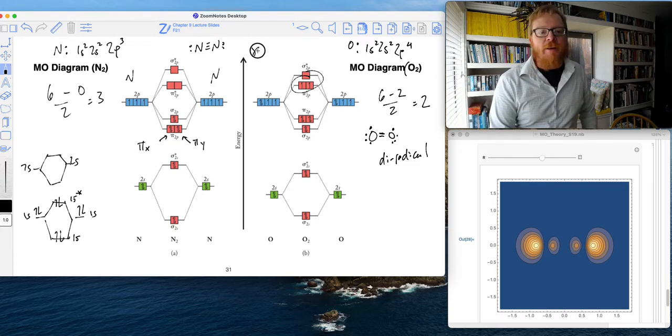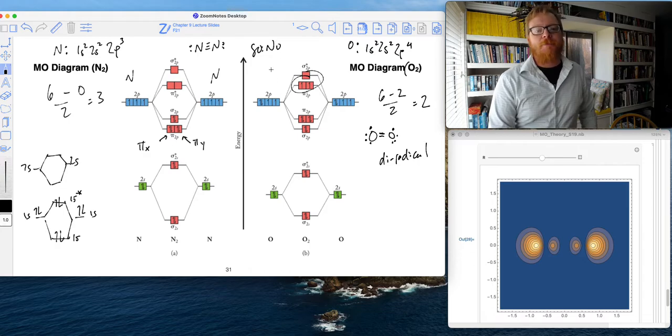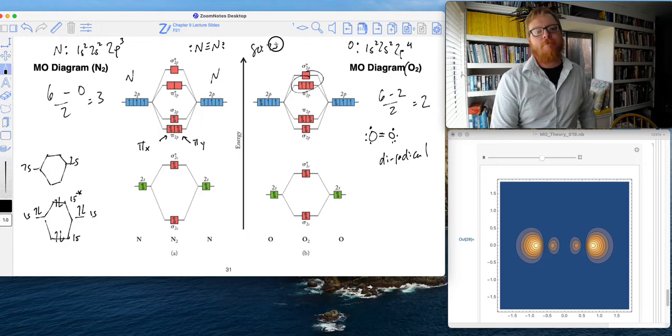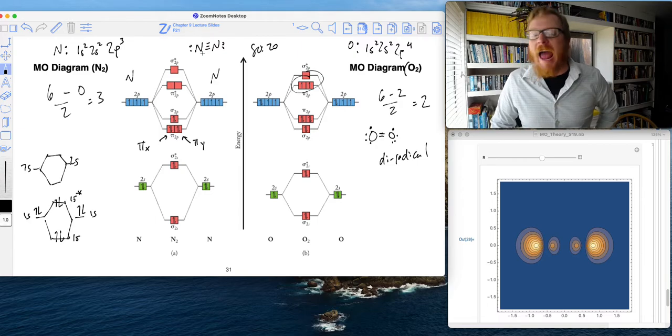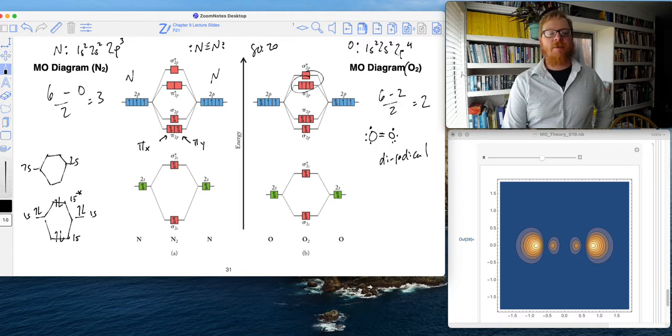But our atmosphere is 80-20—oops, that's not a 20—our atmosphere is 80-20 oxygen to nitrogen. Nitrogen is more or less unreactive. That triple bond makes it very stable, no anti-bonding electrons.